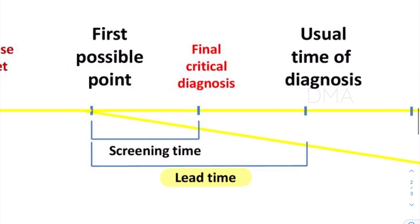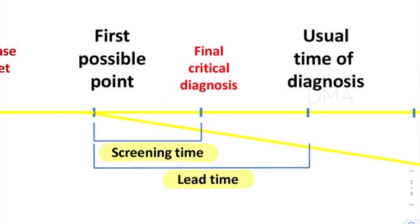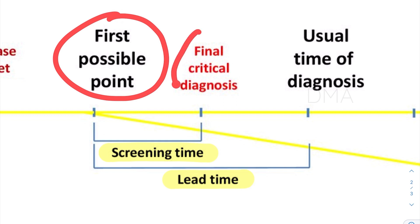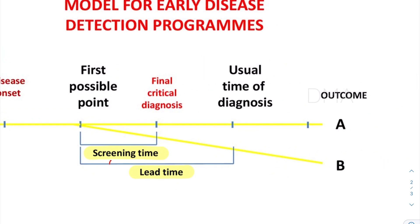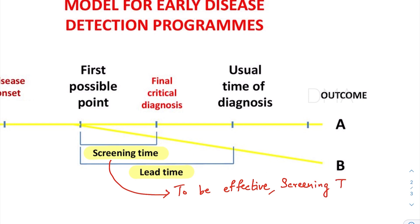There is another term called screening time. Screening time is the time period between the first possible point of detection of a disease till the final critical point of diagnosis. This is important because this is the time when we apply screening tests, and the screening test can actually be effective to the patient in terms of disease outcome. For a screening test to be effective, it should be applied between these two points — between the first possible point of detection and the final critical point of diagnosis — and hence it is called screening time.